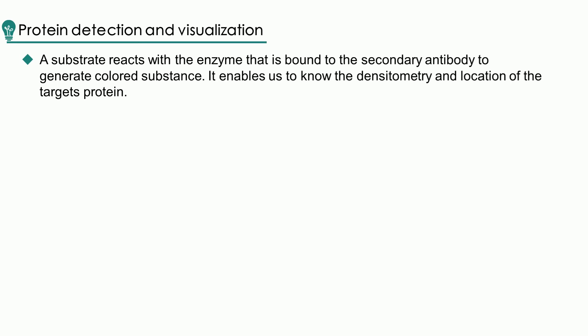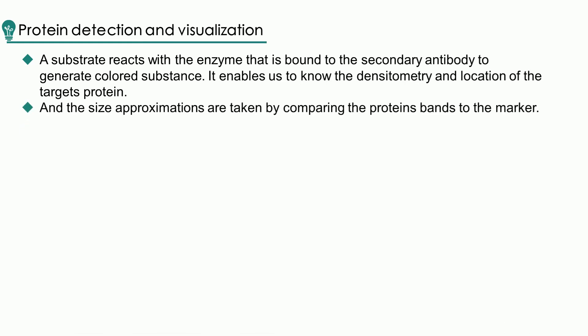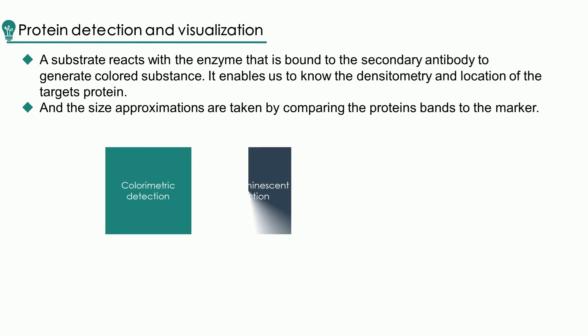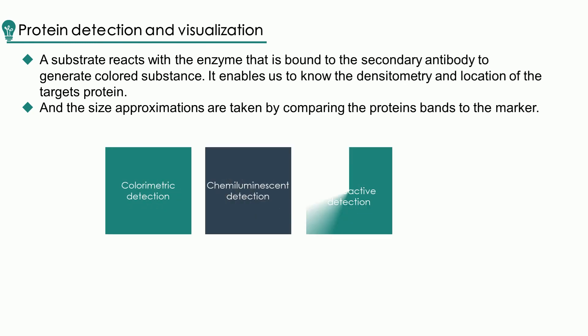A substrate reacts with the enzyme that is bound to the secondary antibody to generate a colored substance, enabling us to know the densitometry and location of the target proteins. Size approximations are taken by comparing the protein bands to the marker. Several detection systems are available for protein visualization, such as colorimetric detection, chemiluminescent detection, radioactive detection, and fluorescent detection.